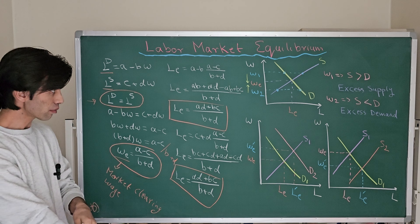Plugging the market clearing wage into the labor supply curve: LS = C + D × (A − C)/(B + D), giving BC + CD + AD − CD, so CD cancels out and we again get (AD + BC)/(B + D). At both cases, whether we plug the market clearing wage into labor supply or labor demand, we get the same equilibrium quantity of labor, L_E.